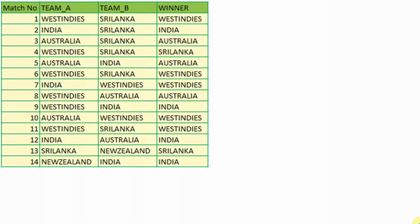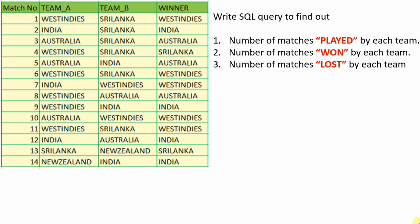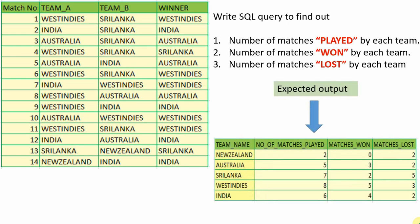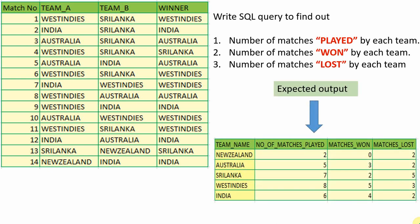First, let us understand what the expectation is. Here is a cricket table which contains information about the teams and the winners. Few teams played as team A and few teams played as team B. There is another column which contains information about who won that particular match. The expectation is to write a query that prints how many matches were played by each team, and how many matches were won and lost by each team. Basically, we are going to write a SQL to print the dashboard.